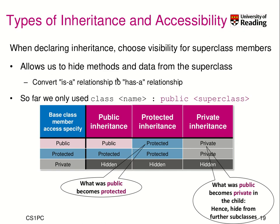When we declare inheritance, we have to choose the visibility for the superclass members and how they will be inherited to our new class. This allows us to hide methods — basically converting an is-a relationship to a has-a relationship. There are different ways of doing the same thing in C++. Let's look again at a class declaration. We declare a class name, like class car, and say it inherits publicly from a superclass like vehicle. So far we used public here as the specification for accessibility.